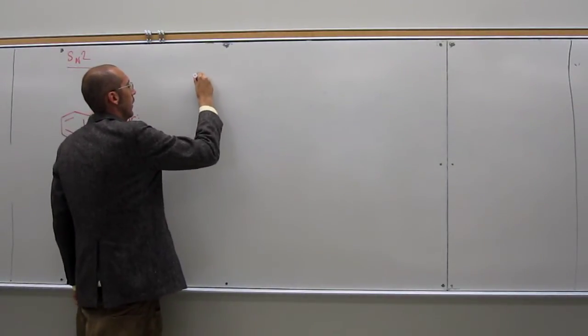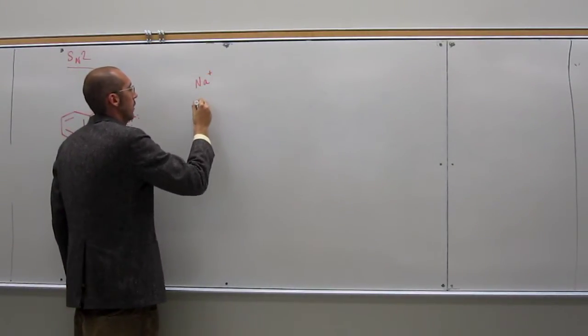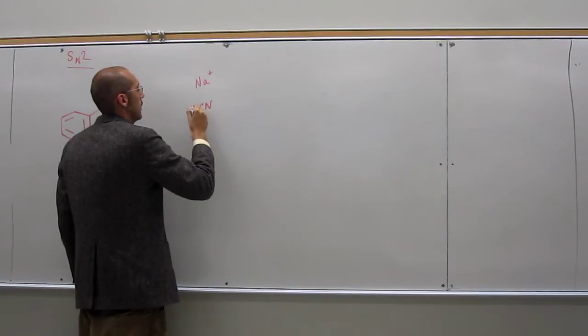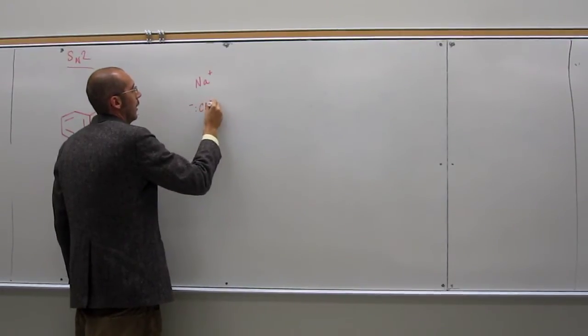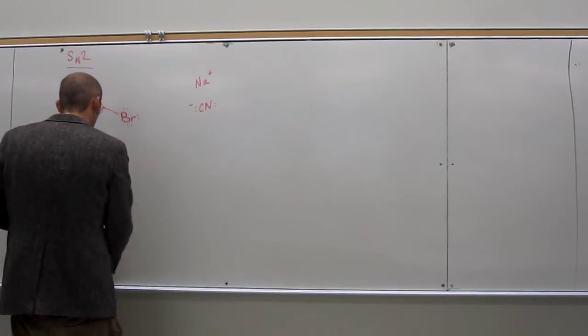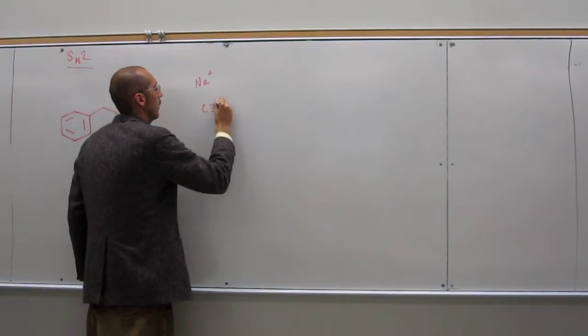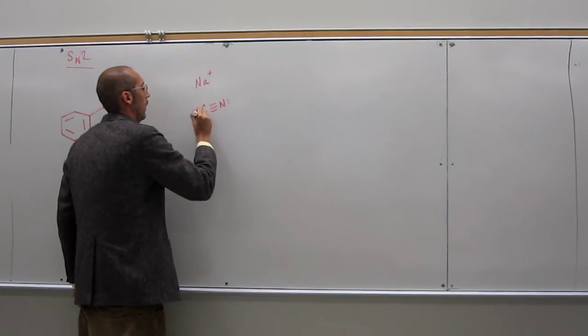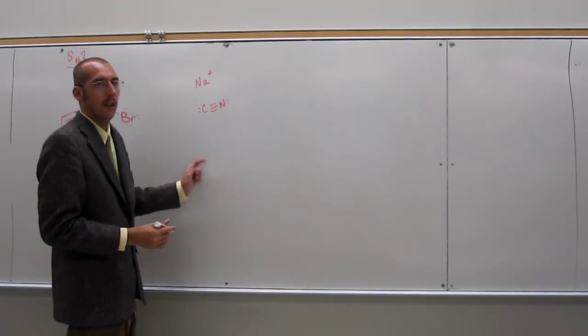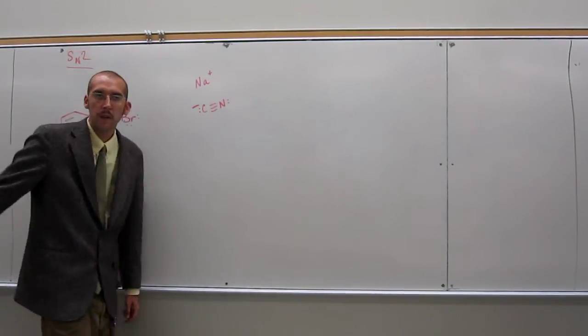So sodium cyanide, sodium CN minus. So cyanide actually looks like this. I'll just structure it a little bit better. And where does the negative charge lie? On this carbon, of course, right?